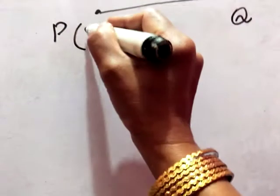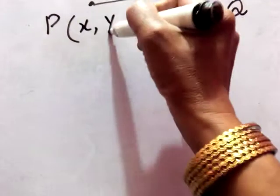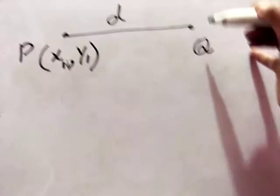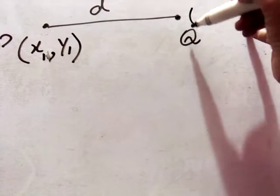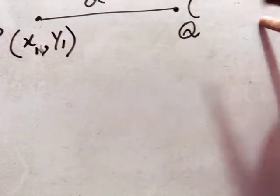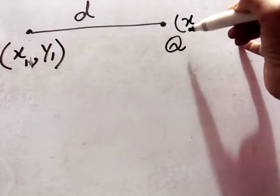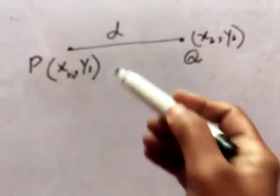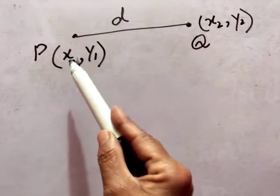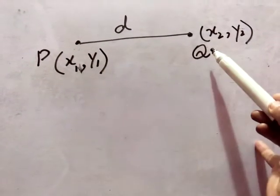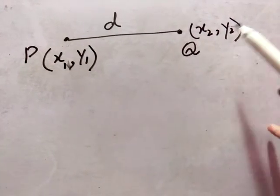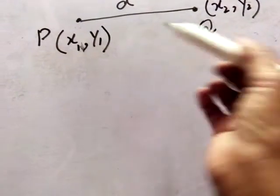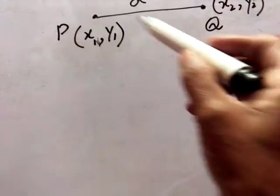Point P has coordinates X and Y. Since this is the first point, we write X1 and Y1. This is the second point Q, and it has two coordinates — the X coordinate and Y coordinate — so we write X2 and Y2. Point P has coordinates X1 and Y1, and point Q has coordinates X2 and Y2. These names are for specification.